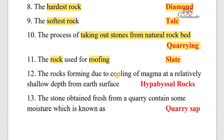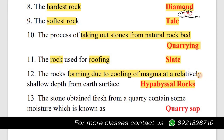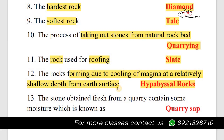Next question: The rocks formed due to the cooling of magma at a relatively shallow depth from the earth's surface are known as hypabyssal rocks.